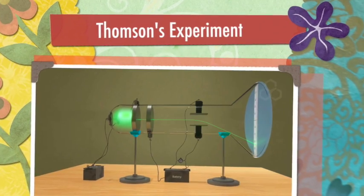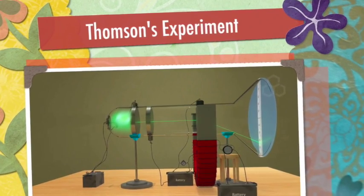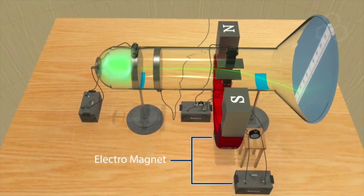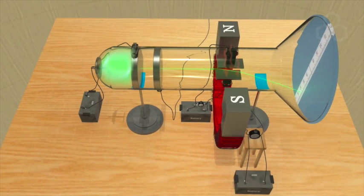Thompson's experiment. We create a uniform magnetic field using an electromagnet perpendicular to the electric field applied by the metal plates. The field of the magnet flows from north pole to south pole.